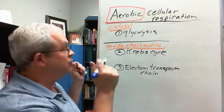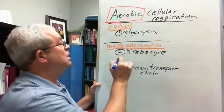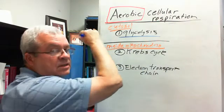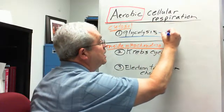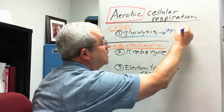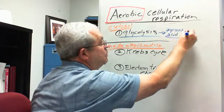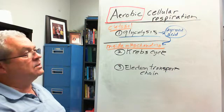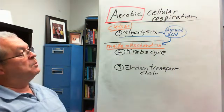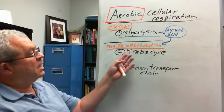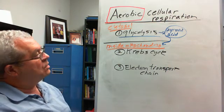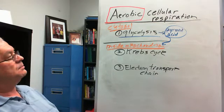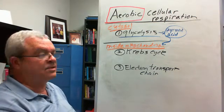And so one step that will be important as we talk about anaerobic respiration is the end product of glycolysis. Glucose goes in, but the end product of glycolysis is something called pyruvic acid. And that pyruvic acid enters the mitochondria for ongoing processing. That's just a step in the assembly line. Pyruvic acid is a product that's passed on to the next step.